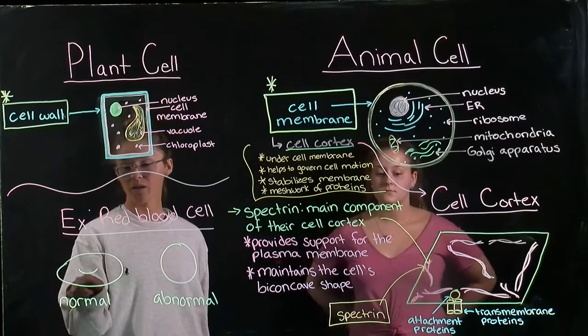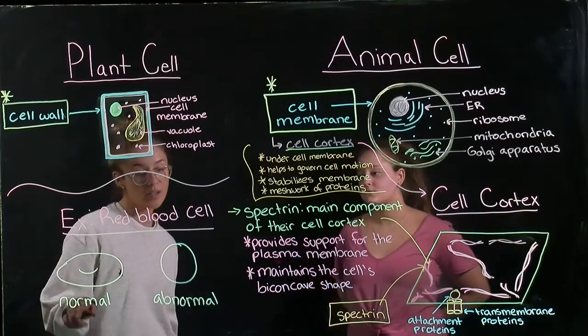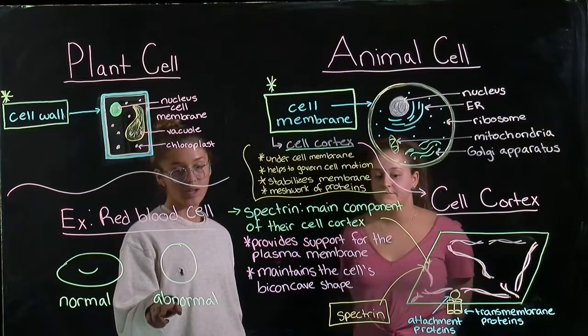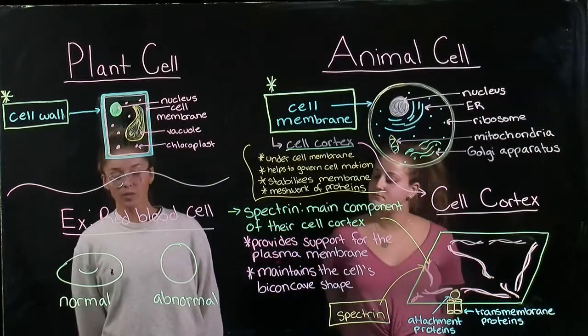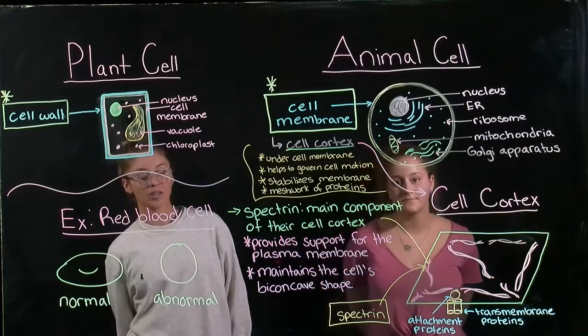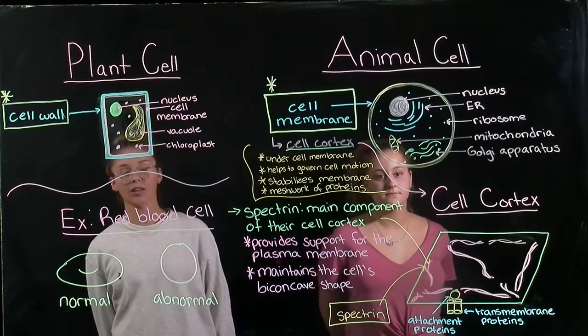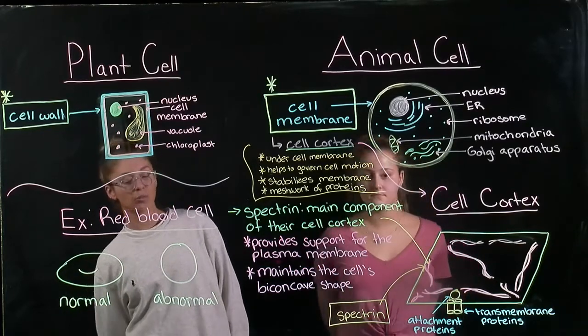A normal red blood cell is biconcave and flattened, while an abnormal red blood cell is spherical and very fragile. The importance of the cell cortex in red blood cells is that it provides mechanical strength as the cells are pumped through blood vessels.